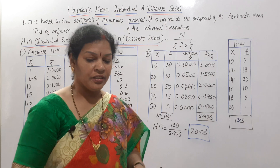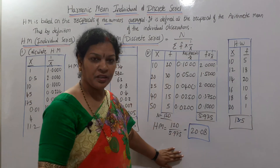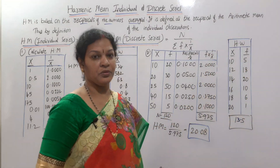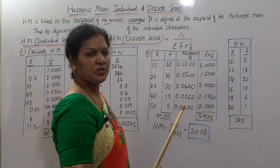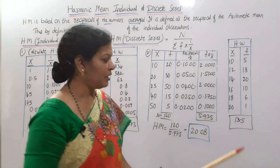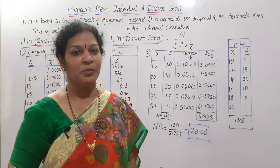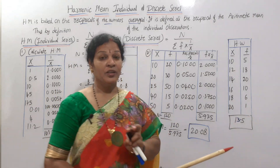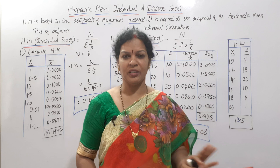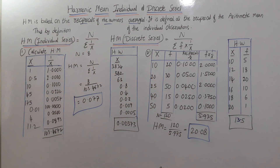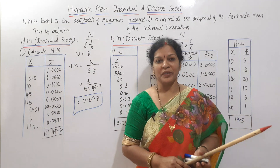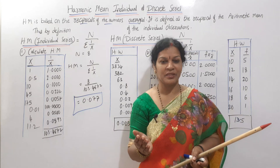That is our answer — 20.08. Clear? We also have a third problem. For that problem, calculate 1 by x first, then f into (1 by x), and apply the same formula — the answer is 13.5. After this, we will cover the continuous series harmonic mean in the next class.